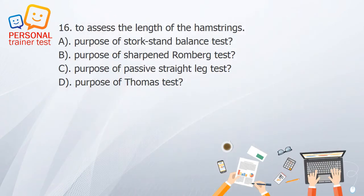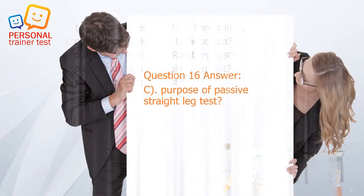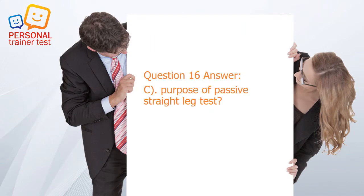Question 16. A. Purpose of stork stand balance test. B. Purpose of Sharpened Romberg test. C. Purpose of passive straight leg test. D. Purpose of Thomas test. Answer: C. To assess the length of the hamstrings — purpose of passive straight leg test.